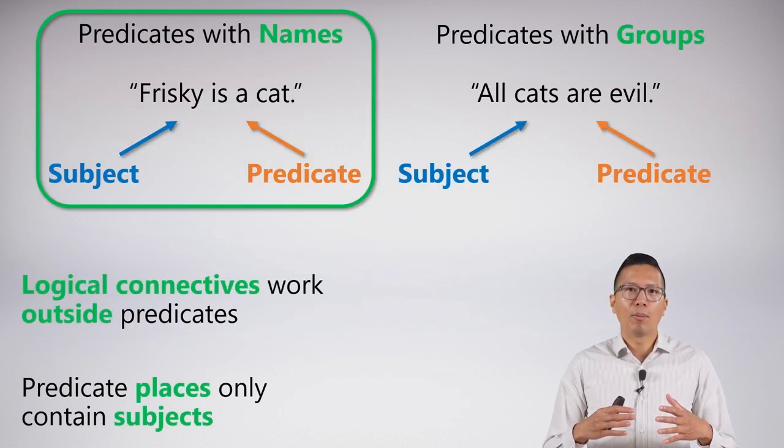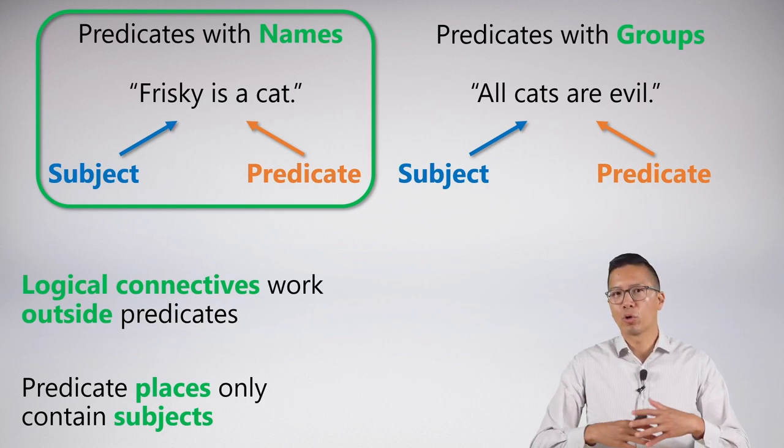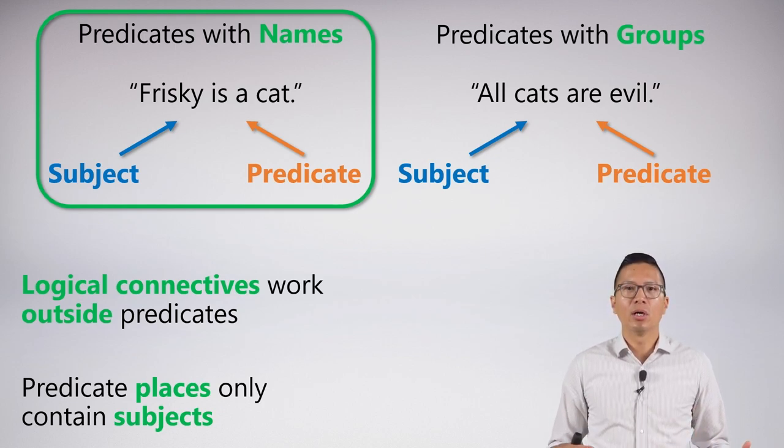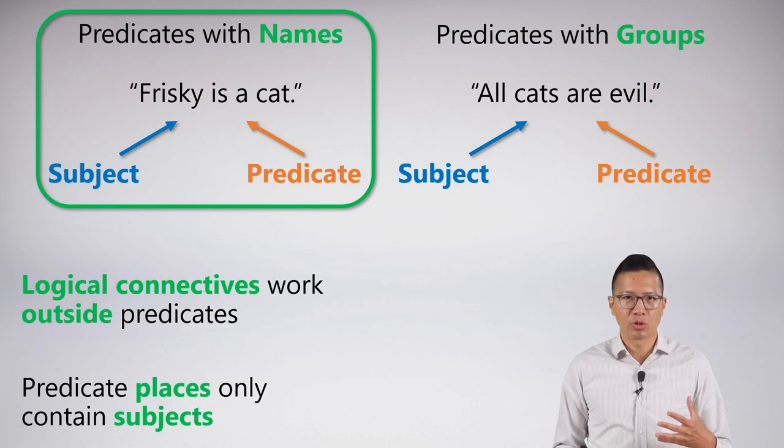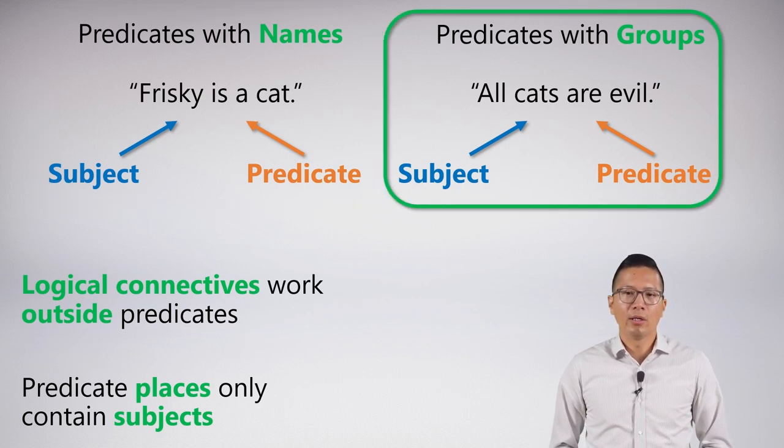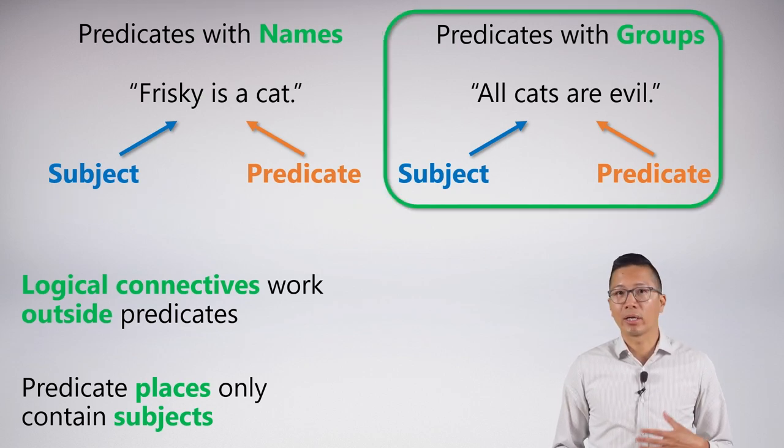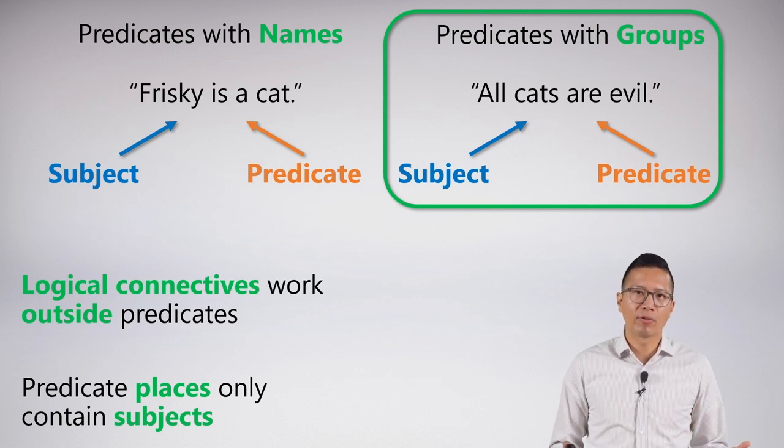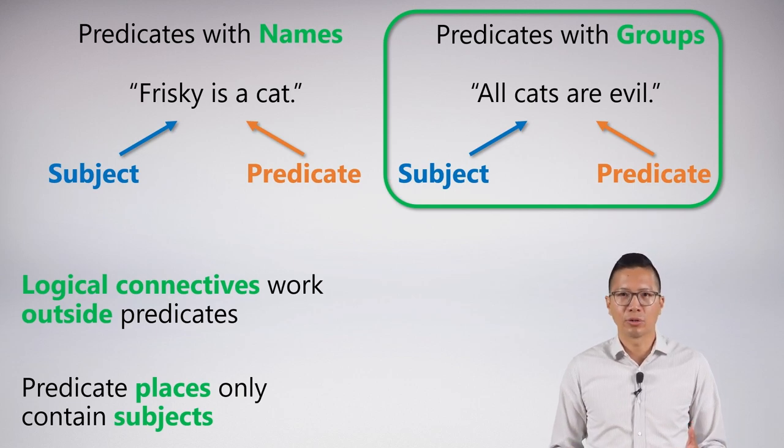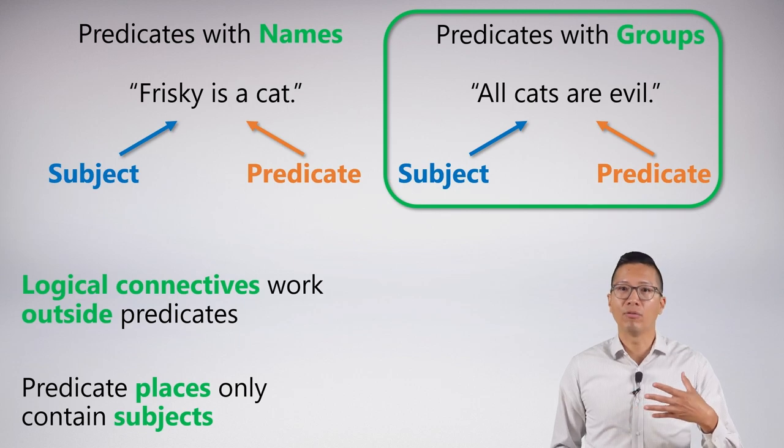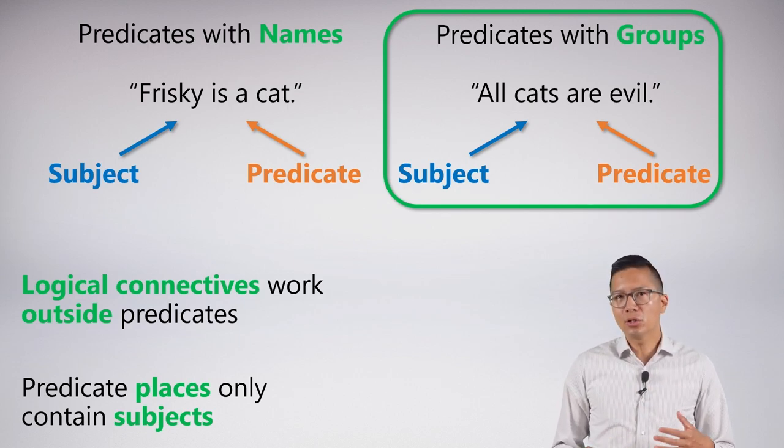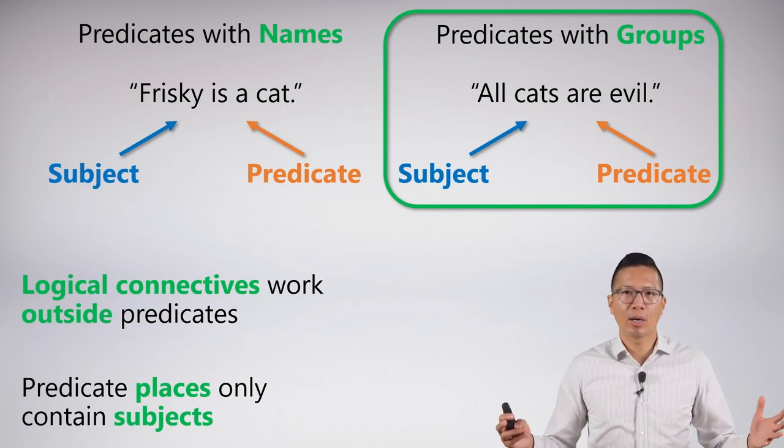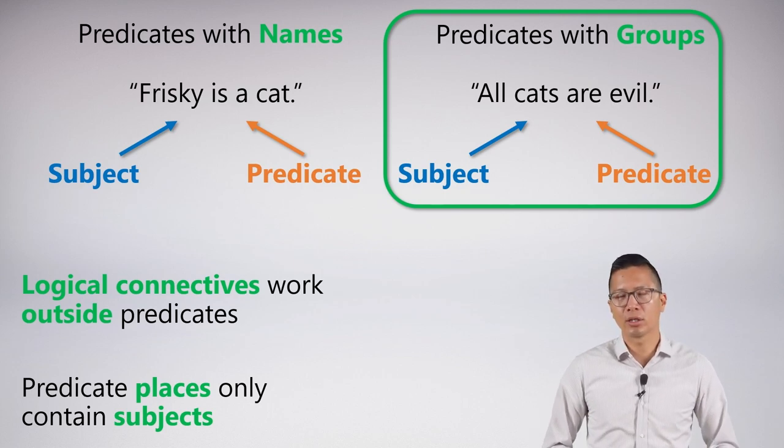So predicates with names, that's what we've covered so far. Logical connectives work outside, and predicate places only contain those subjects, as we just saw. Now we've got to look at predicates with groups. What's the difference between symbolizing 'all cats are evil' versus some individual named cat? This is where things get tricky. In this video, I'm just introducing a lot of these concepts, and we'll go over the technical details later on.